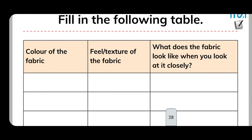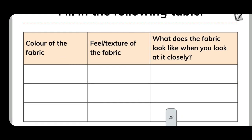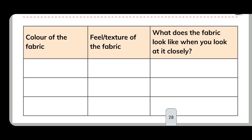Fill in the following table. Make a table in your notebook with different columns: the first column for the color of the fabric, the second column for the texture of the fabric — soft, rough, or hard — and the third for what the fabric looks like up close.